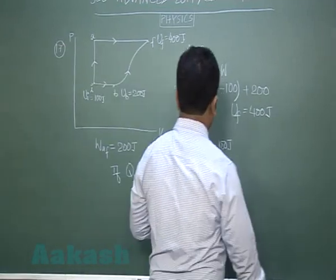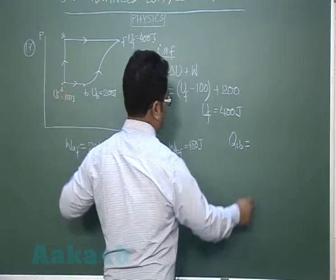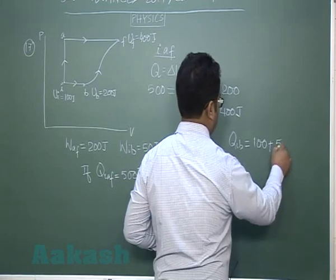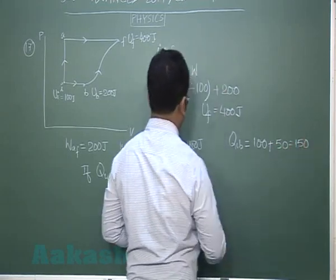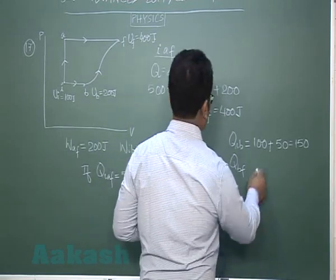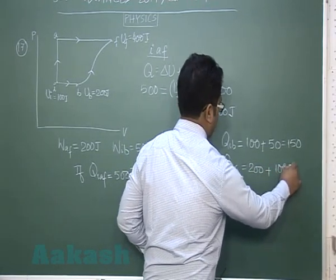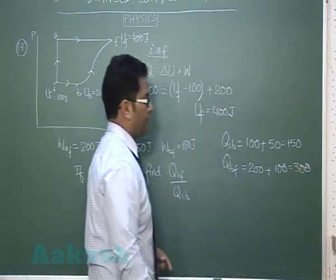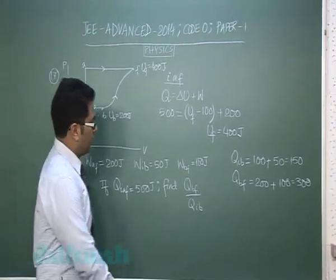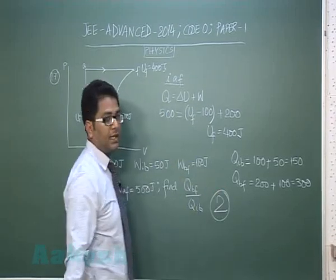Now considering IB, Q_IB is change in internal energy that's 100 plus work done in IB has been given as 50, so that's 150. And in BF the change in internal energy is 200 and work done in BF has been given as 100, and this is 300. So there were lots of things to interlink, otherwise it's quite simple and the ratio comes as 2 is to 1, so 2 would be the correct integer.